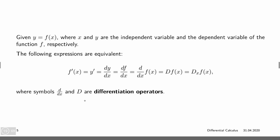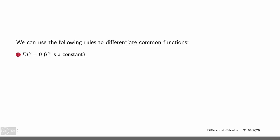Both d over dx and capital D are our differentiation operators. Now, in order to compute derivatives, we can use a number of rules that we combine to compute the derivative of more complicated functions. First, the derivative of a constant c is zero, because it doesn't depend on x — if we change x, nothing happens. The derivative of x to the nth power equals n times x to the n minus 1 — the well-known power rule. Note that n doesn't have to be a natural number but can be any real number.